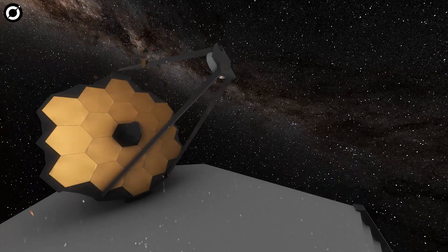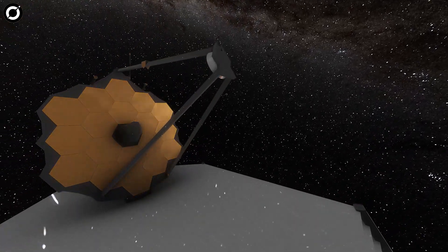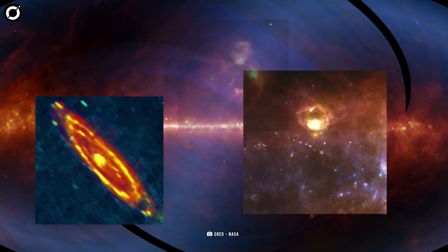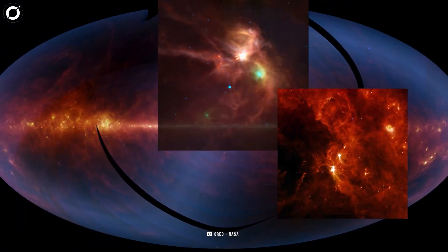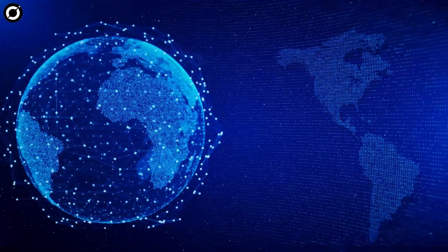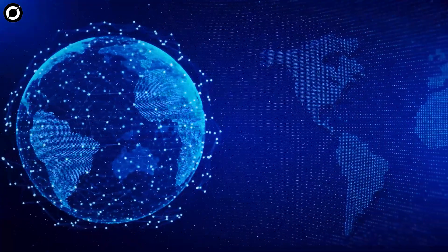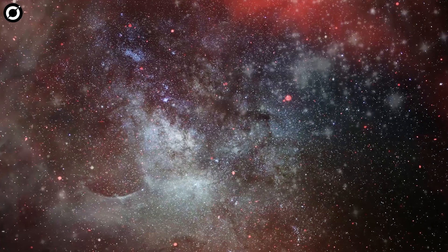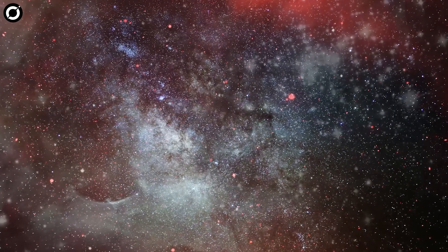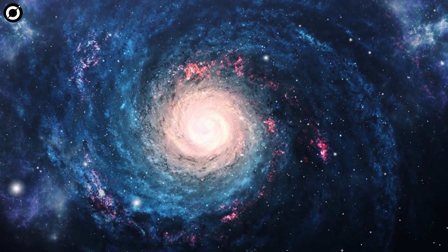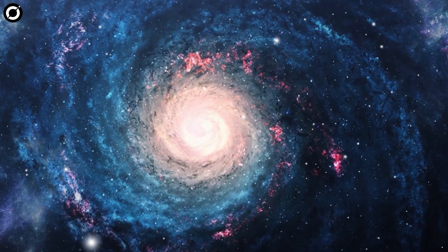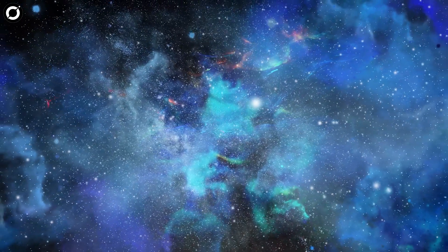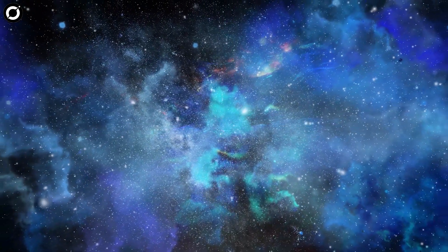The universe might not just be the 93 billion light-years across that we can see. If the universe is infinite, then it could go on forever in all directions. This is hard for us to imagine because we live in a world with clear boundaries and edges, but in the case of the universe, there might be no edge at all. This idea is supported by the fact that the universe seems to be homogeneous and isotropic on a large scale, which means it looks the same everywhere, and there's no clear center or edge to it.